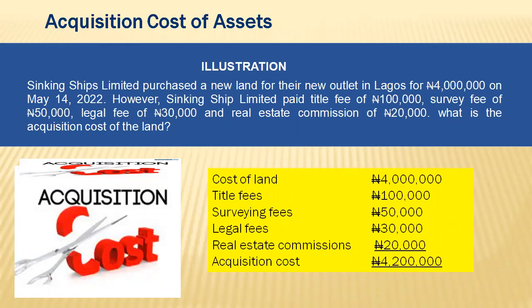Let's look at an illustration. Sinking Ship Limited purchased new land for their new outlet in Lagos for 4 million naira on 14th May 2022. They also paid a title fee of 100,000 naira, survey fee of 50,000, legacy fee of 30,000, and real estate commission of 20,000. The acquisition cost of the land is the sum of all these amounts, giving a total of 4.2 million naira.